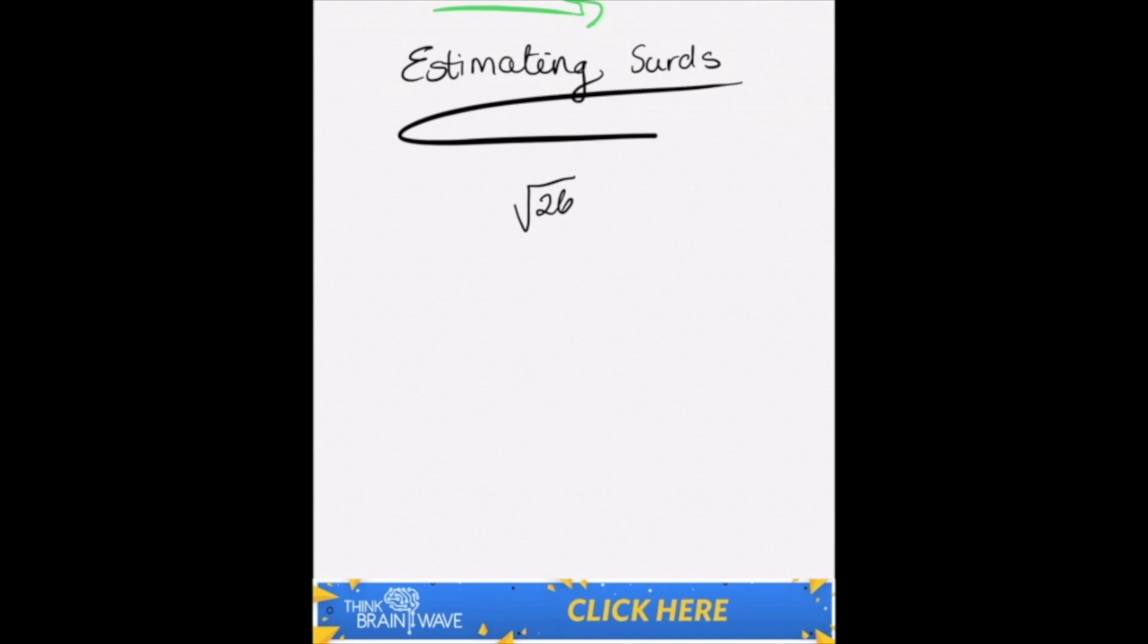Now this may look difficult, but it's actually quite simple if you know a certain technique. Let's try the square root of 16 first because we know that that is 4. And if you're unsure you can easily do what is called the ladder method.